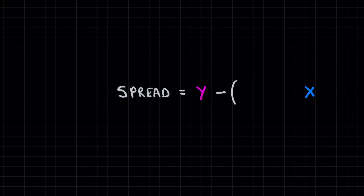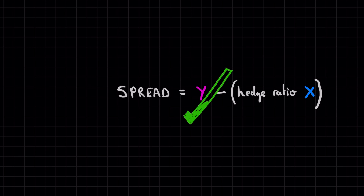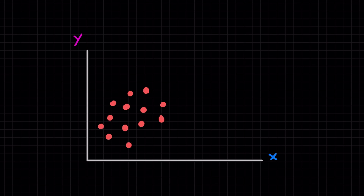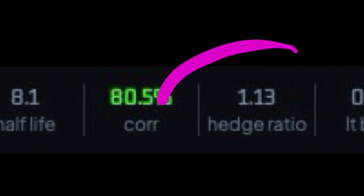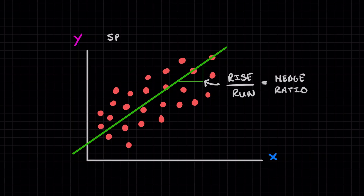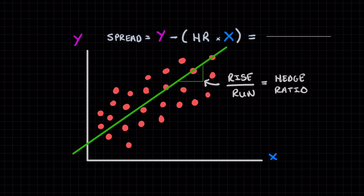What about when they're very different, like Cosmos and Filecoin? In reality, instead of just subtracting one asset from the other, we subtract some ratio of one asset from the other. This ratio represents: for every unit of movement in the price of X, how much does Y typically move by? This ratio is called the hedge ratio. So our calculation for the spread just becomes Y minus our hedge ratio times X. In our case, the spread is equal to Filecoin minus some hedge ratio times Cosmos. That is just one way to understand it.